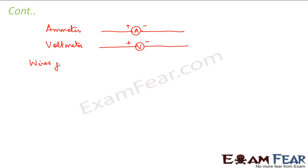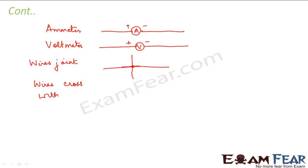Now how do we represent wires which are joined? If one wire is going in one direction and another wire crosses it and they are joined, we represent that with a dot at the junction. But if wires are crossing each other without joining, that is represented differently — without a dot — meaning the two wires are not connected.